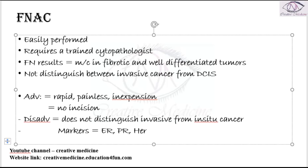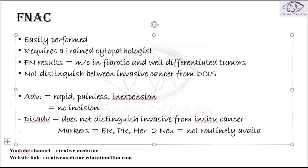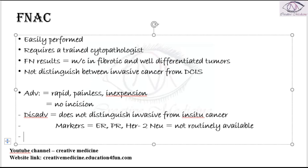The markers ER positive, PR positive, and HER2 new positive are not routinely available with FNAC. FNAC does not tell us about ER, PR, or HER2 positivity. False negatives can occur, and it should only be performed by a trained cytopathologist.